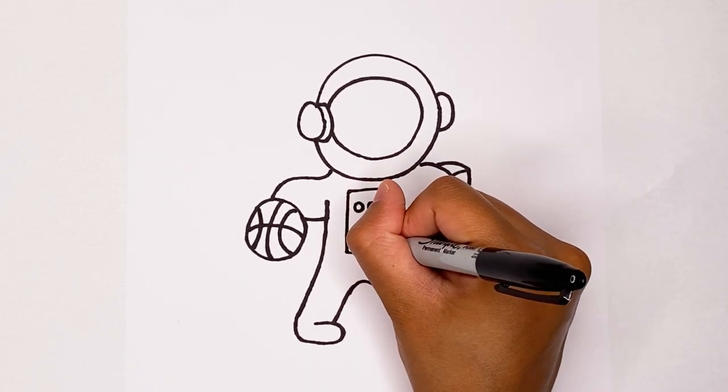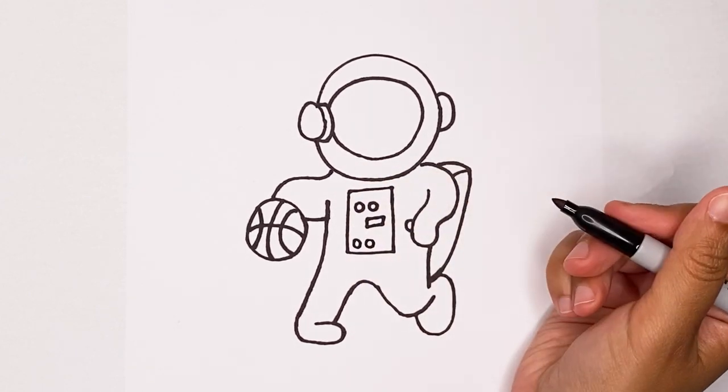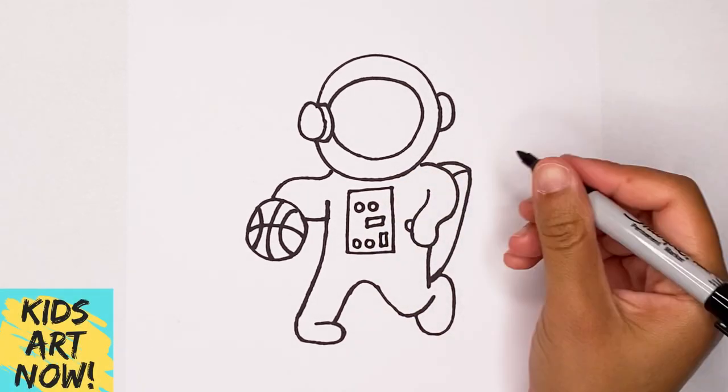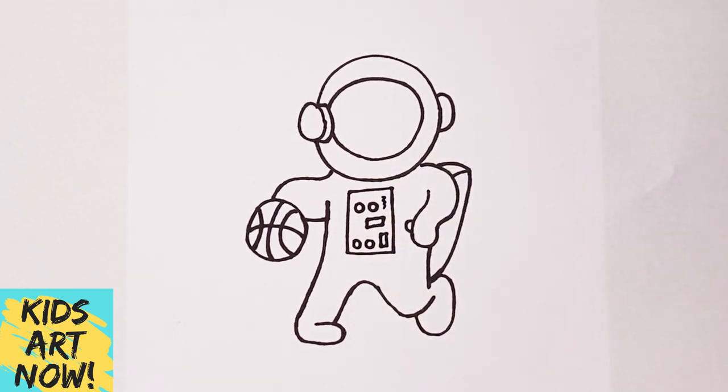Let's put a couple more buttons and knobs, put two right there. Another fun rectangle, maybe a squiggle. Who knows what it's for. So let's color them in.